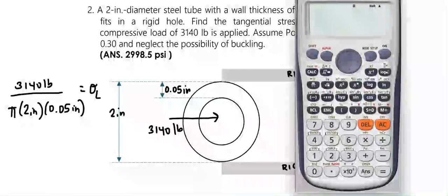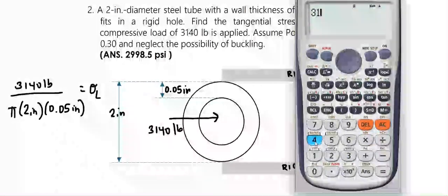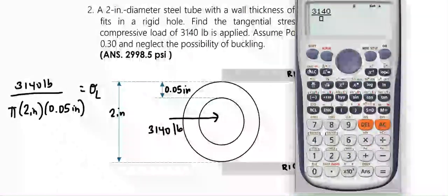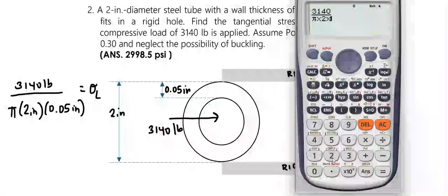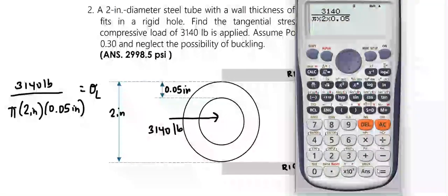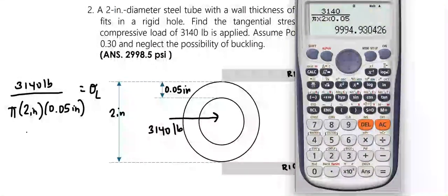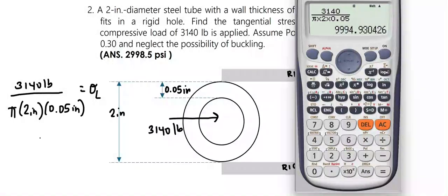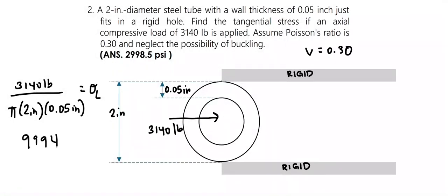Solving, we get 3,140 pounds divided by π times 2 times 0.05, which equals 9,994 pounds per square inch, or 9,994 psi.